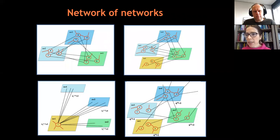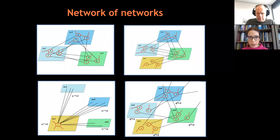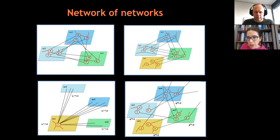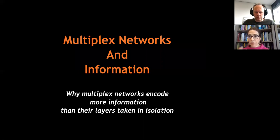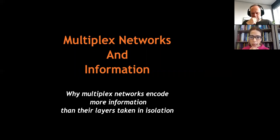Networks of networks come in many different structures and many different topologies. You have different layers characterizing different types of interaction, and there is a lot of degrees of freedom in how these different layers interact. You can have interaction between one node and many nodes in another layer, or you can have a one-to-one mapping between different layers. Here I will focus on a very special topology — that of multiplex networks — for which more results are available and which still encodes a lot of information.